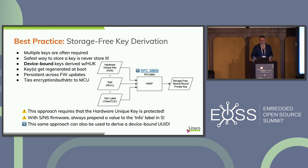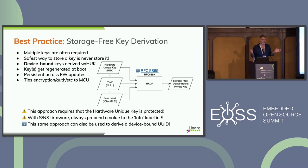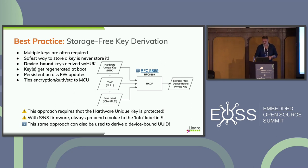Another benefit of HUK-based key derivation is that you can use it to derive a unique device UUID. If a UUID is a useful identifier for your tens, hundreds, or thousands of devices in the field, this also gives you a device-bound unique UUID, and you can generate multiple versions if you want. If you're not familiar with key derivation, have a look at HKDF — it's a well-supported modern standard. The RFC is linked for reference.